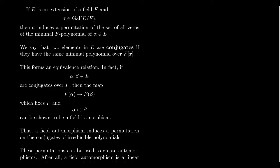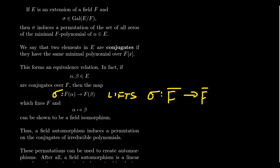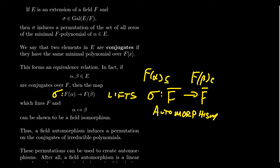Now every field isomorphism can be extended in a unique way to the algebraic closure. So this map sigma can be lifted — it lifts to a map sigma on the algebraic closure. This is something we proved previously. That then gives you a field automorphism on the algebraic closure, because F adjoined alpha is a subfield of F-bar and F adjoined beta is a subfield of F-bar. So that field isomorphism lifts to a field automorphism of the closure.